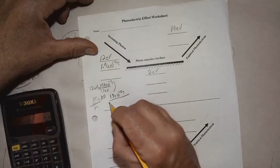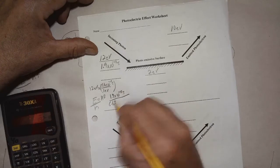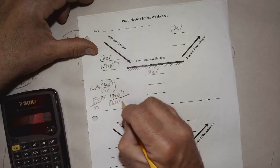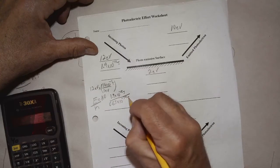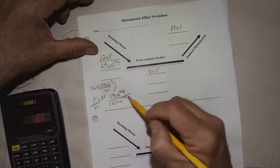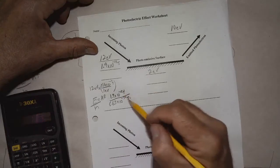Divided by Planck's constant, 6.63 times 10 to the minus 34th joule seconds. The joules will cancel, leave us in reciprocal seconds, which is hertz.